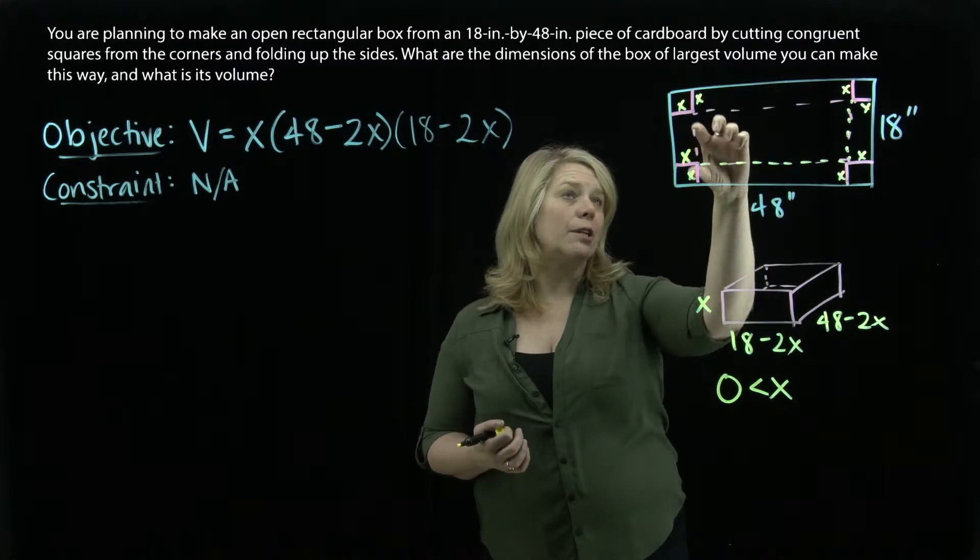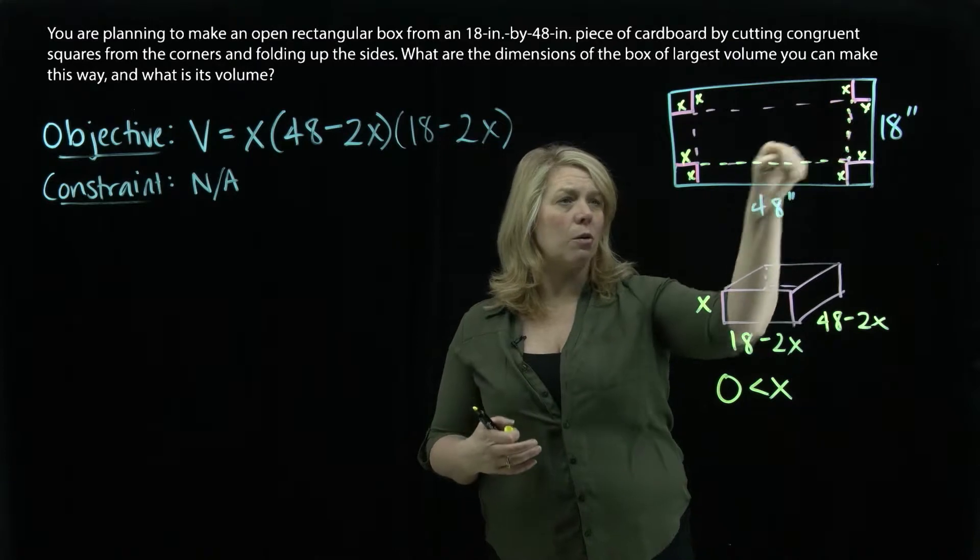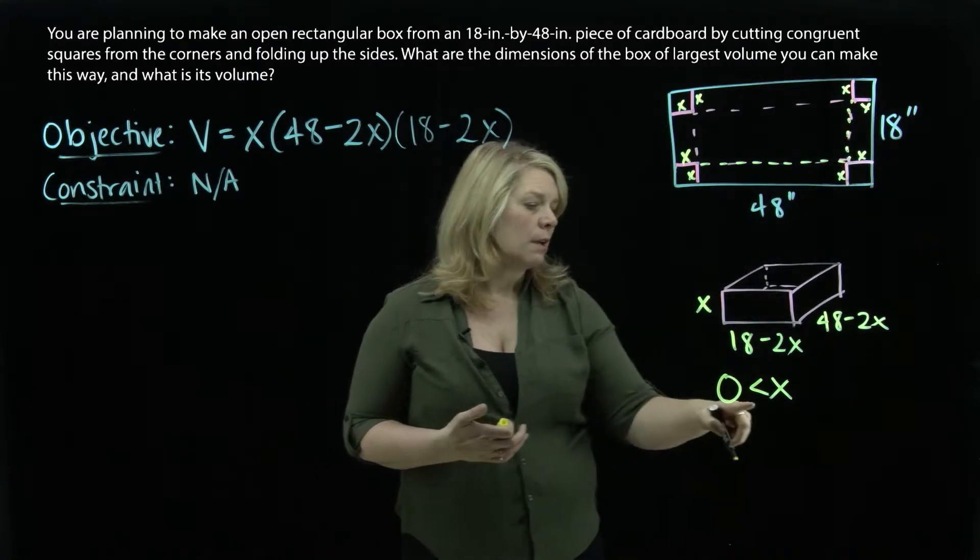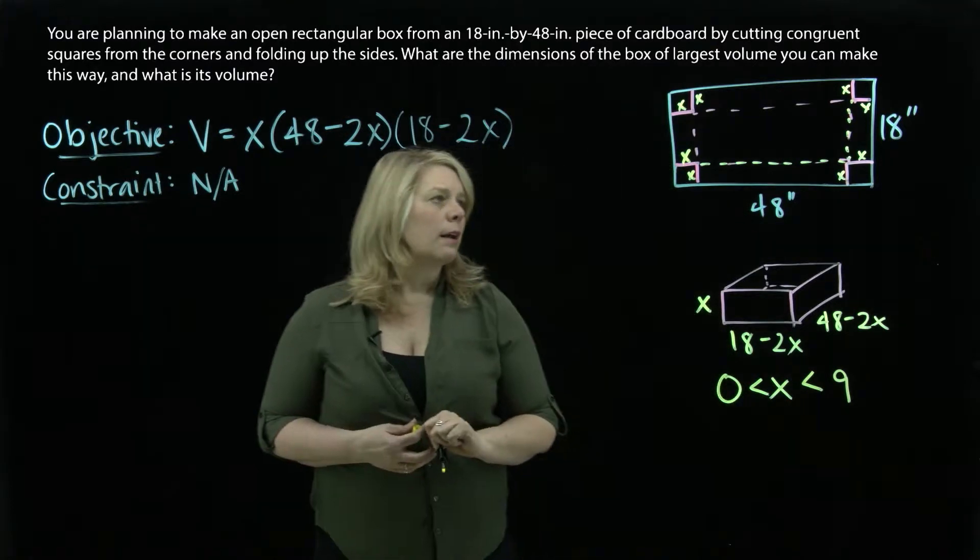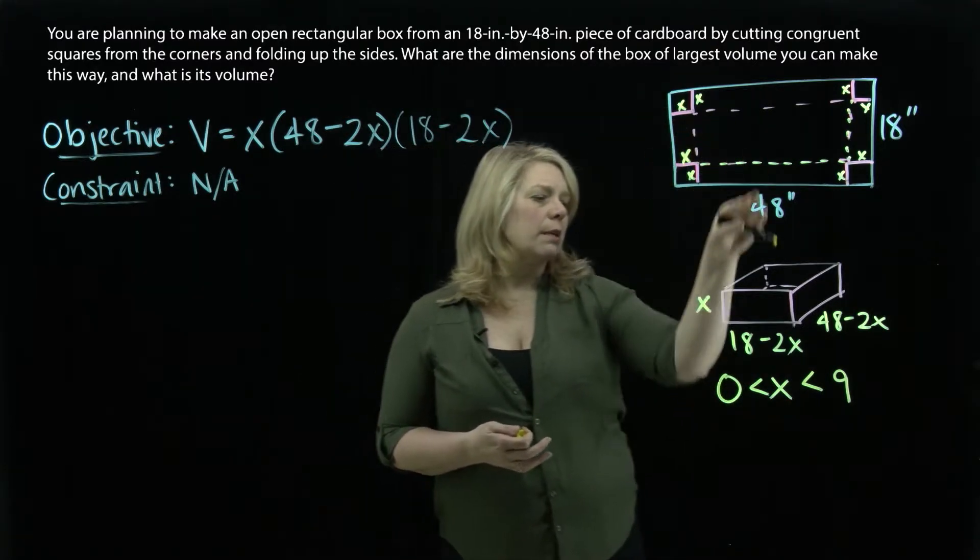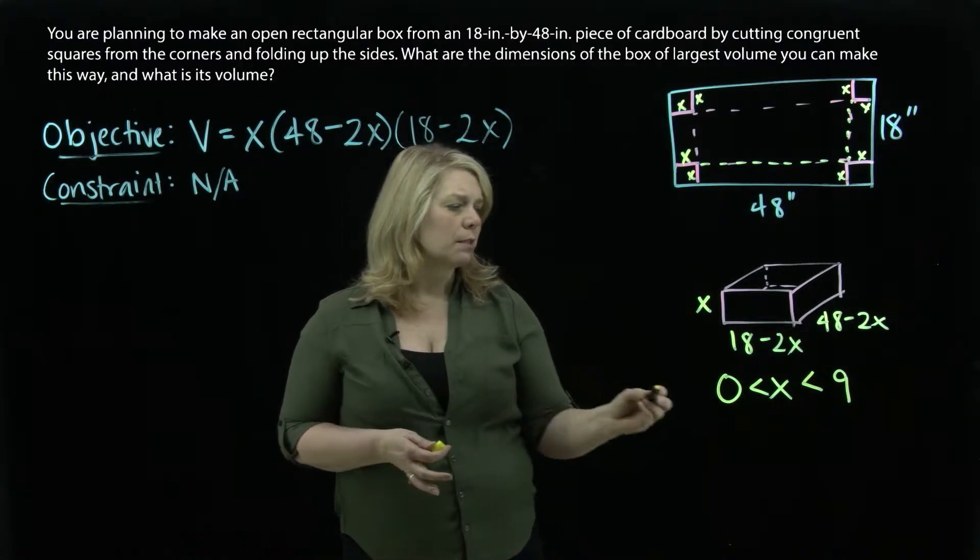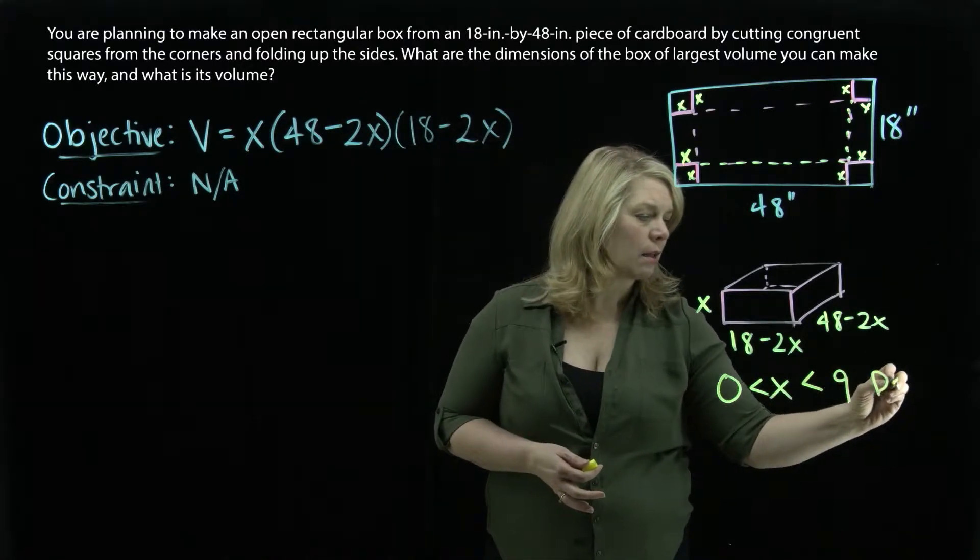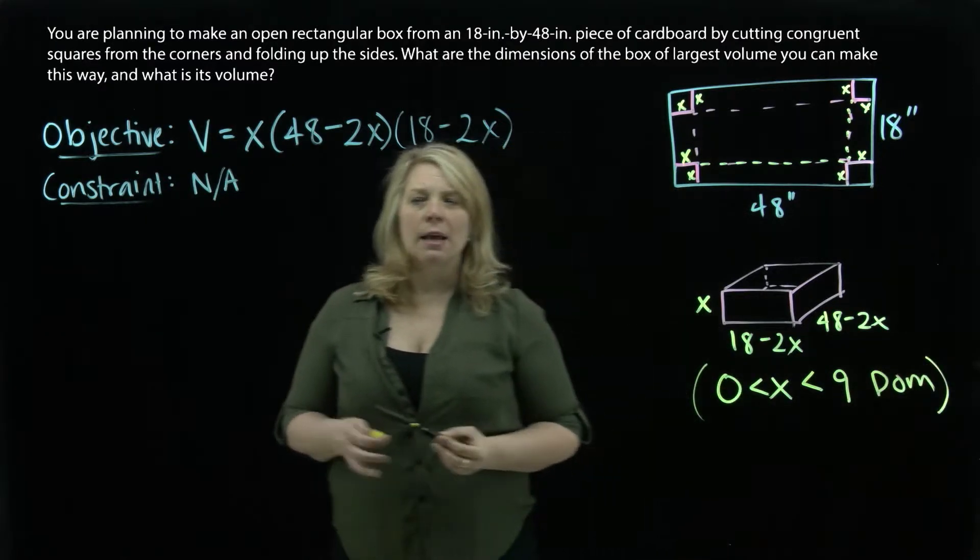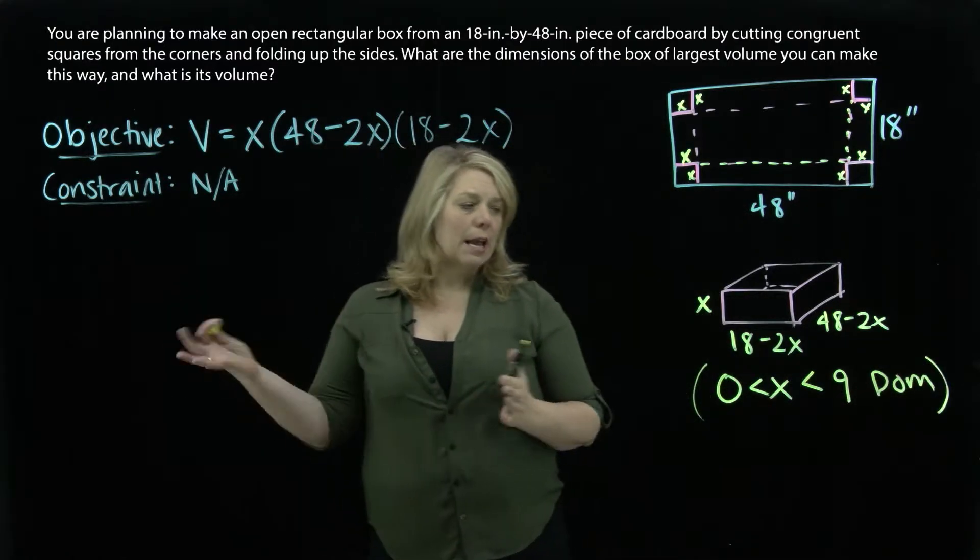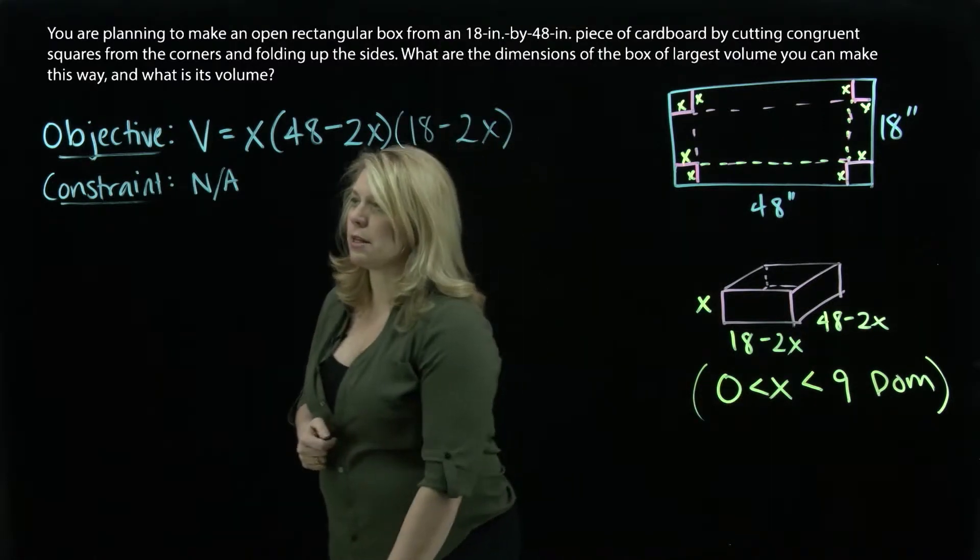If those were 9 inches in width, those little corners I snipped out, then I would be snipping out that whole side that's 18 inches. So I need that x to actually be less than 9 for the dimensions in order to be able to cut out these corners and still have pieces left to fold up a box. So this is our feasible domain. We'll need to think about that when we do the problem. If we get x values that are outside of that interval, we will say those don't make sense in the problem and discard them.